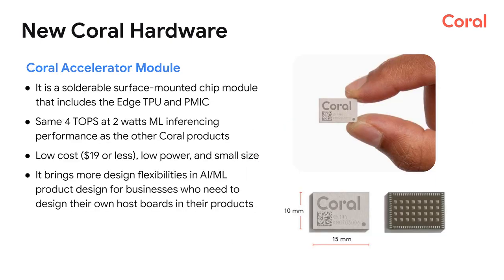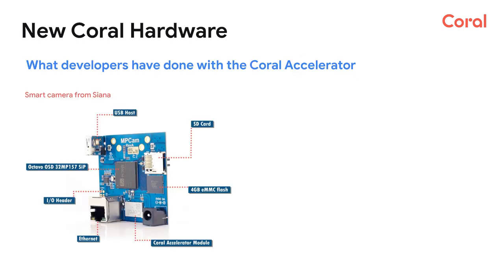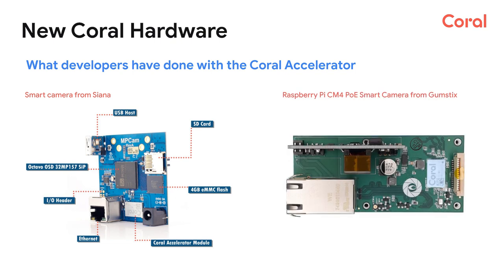Another exciting new product released over the past year is the Coral Accelerator module — a chip module that packages the Edge TPU in a surface-mount chip. It's low cost and offers the same machine learning performance as other Coral products, bringing more design flexibility to customers who need to design their own host boards with the Edge TPU embedded. One example is a smart camera circuit board from Cyena, which has the Coral Accelerator module built right in and is capable of running machine learning models directly on the camera. Gumstix also combines the Coral Accelerator module with the Raspberry Pi CM4 module to make a new smart camera for IoT projects.